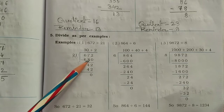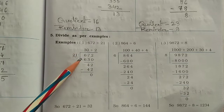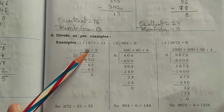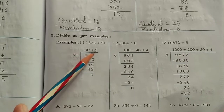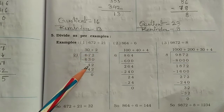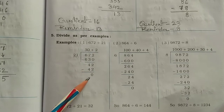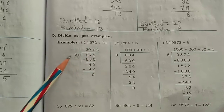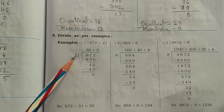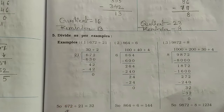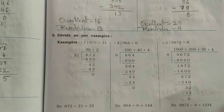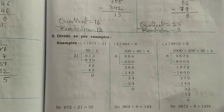21 30's are 630. So do the subtraction. You will get 42. Then the remaining number — we have to do the next part: 21 2's are 42. You will get 0 remainder. Your answer is 30 plus 2, or 32. If you do the division in a simple method, you will get 32. 672 divided by 21 is 32. But here you have to take the round of the correct number.